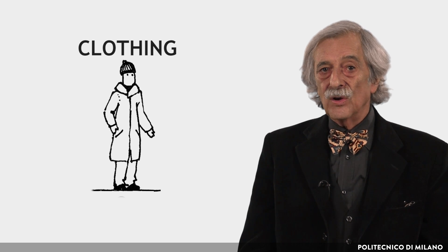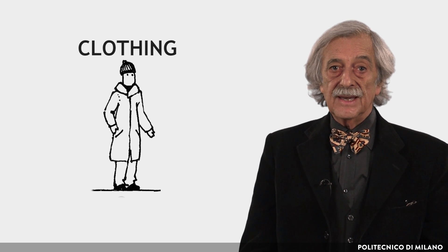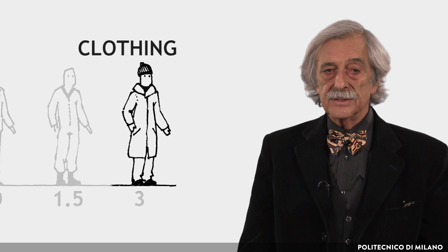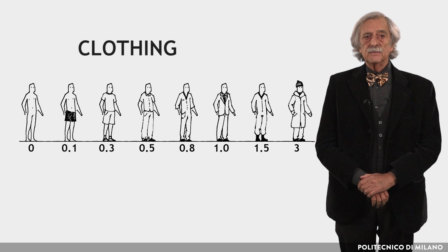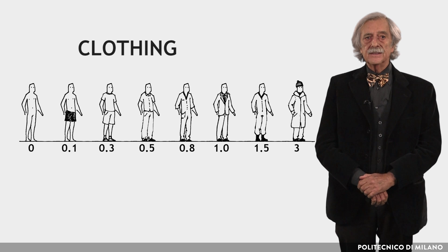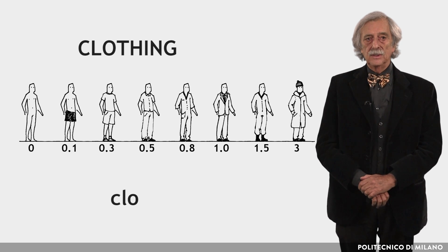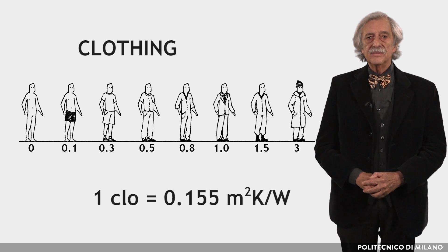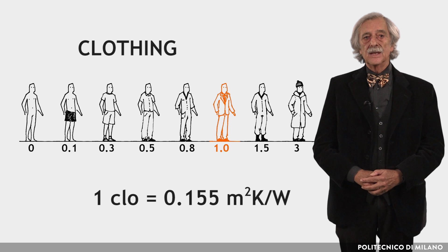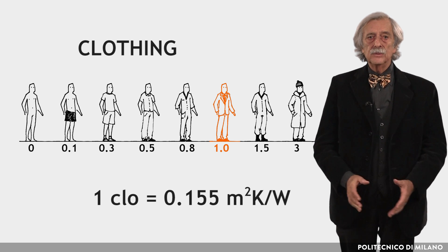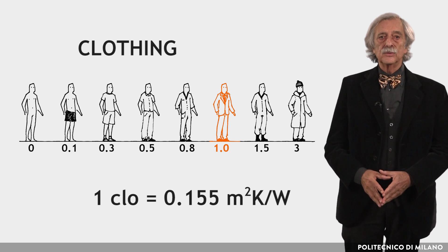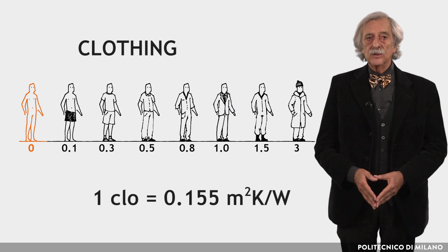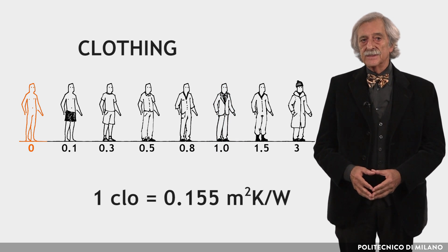The heat exchanges between the body surface and the environment depend also on the clothing we wear, as clothing acts as a thermal insulation. Thus, clothing is measured by its thermal resistance and is expressed in the unit CLO. One CLO is equal to 0.155 square meters Kelvin per watt. The value CLO = 1 corresponds to typical winter clothing. The lowest value is CLO = 0, which is a naked person.